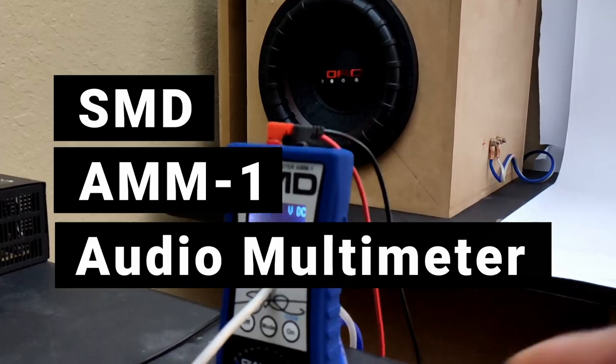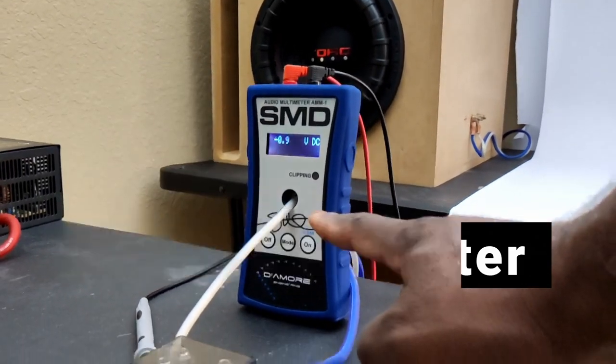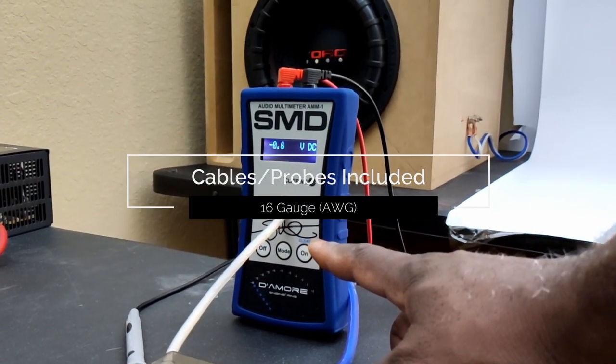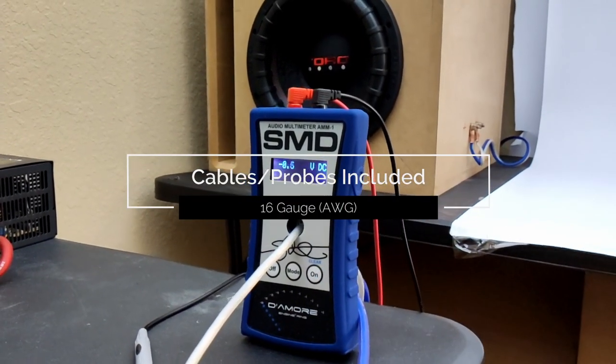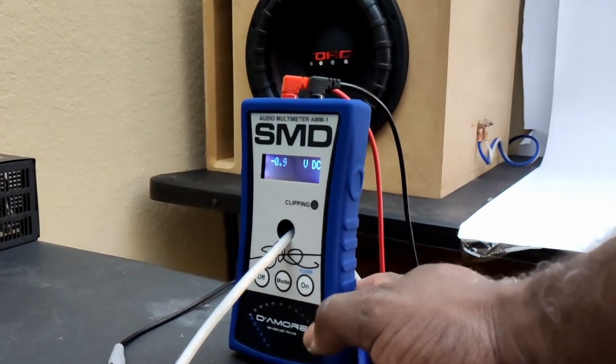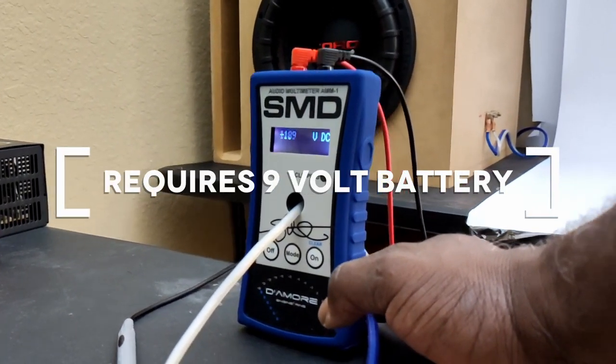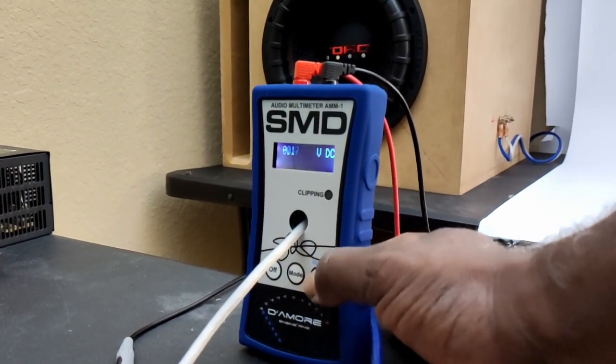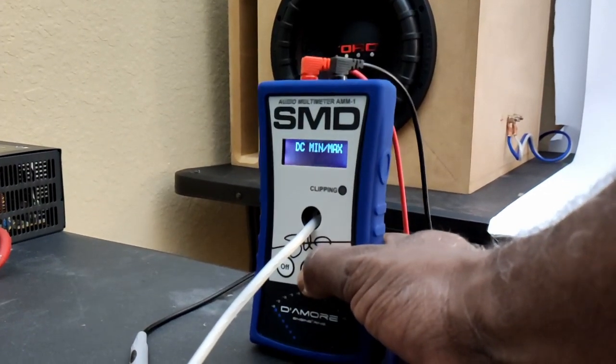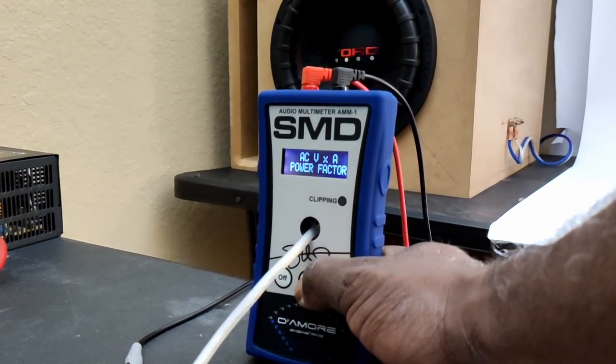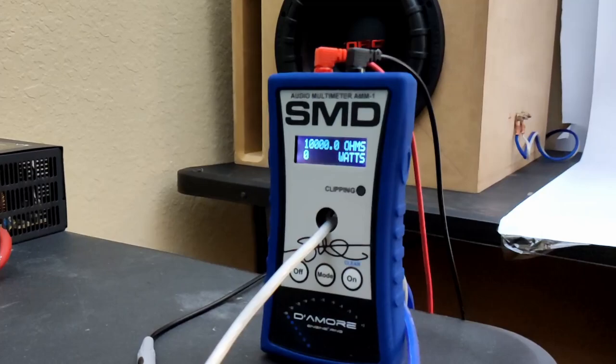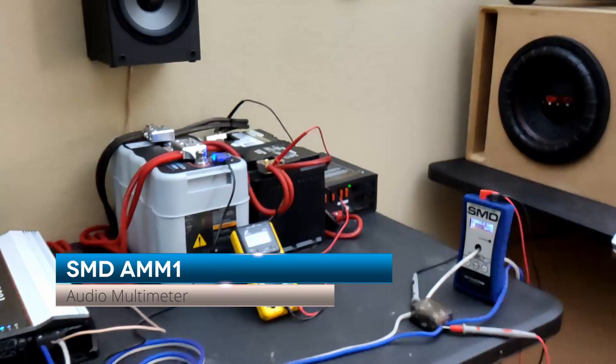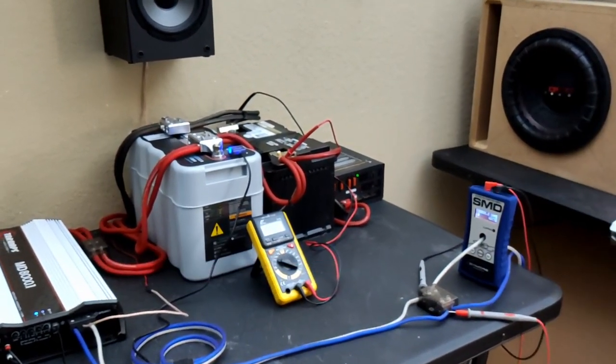For those who don't know about this device right here, this is an SMD AMM1. This is an audio multimeter. This thing can measure real-world power and also do dynos. I'm going to be leaving it on during the testing and we're actually going to be catching the impedance rise and the wattage in real time. In case you guys are wondering what this guy is, that's what he's for.